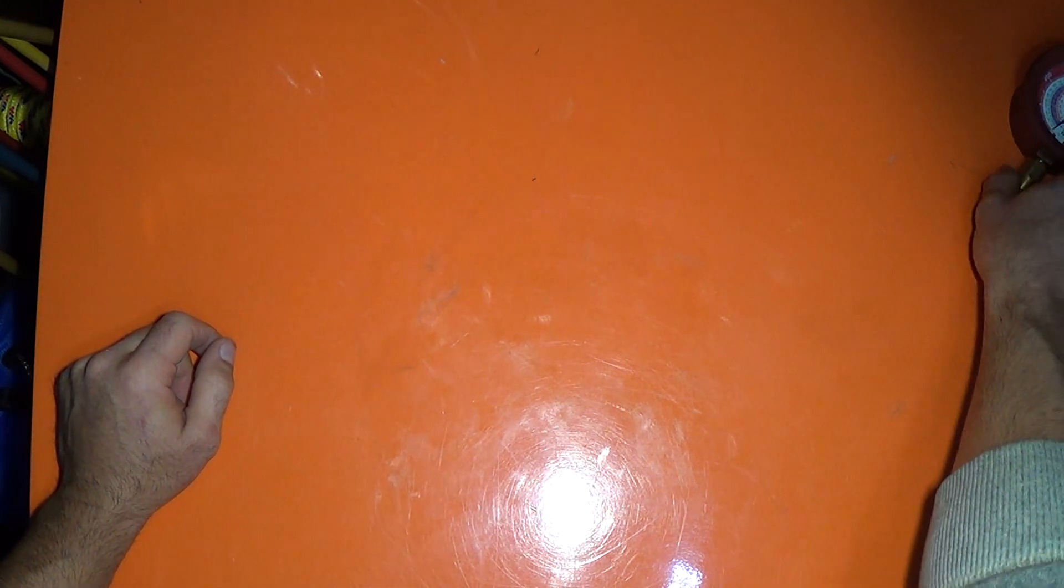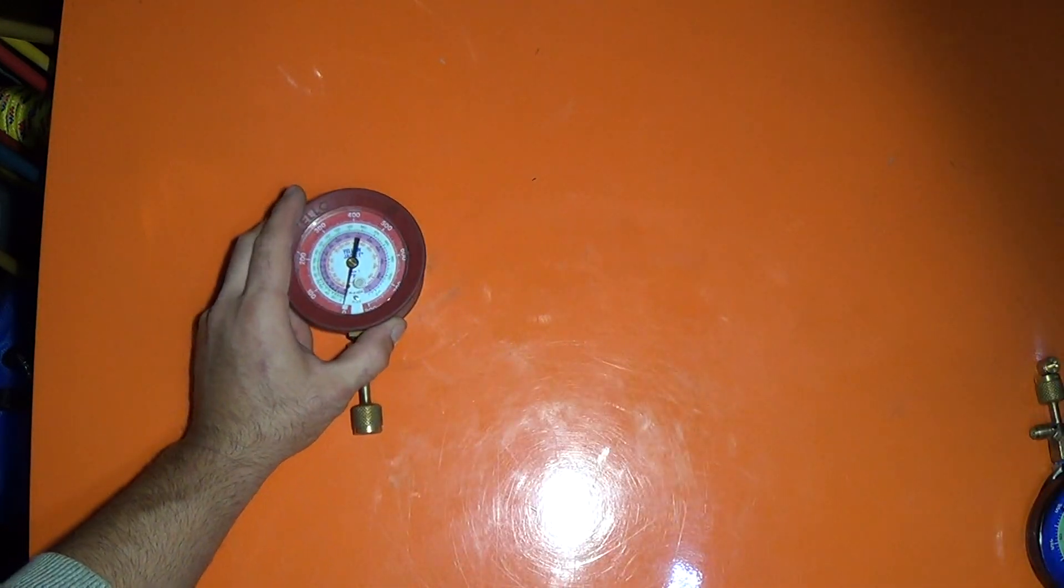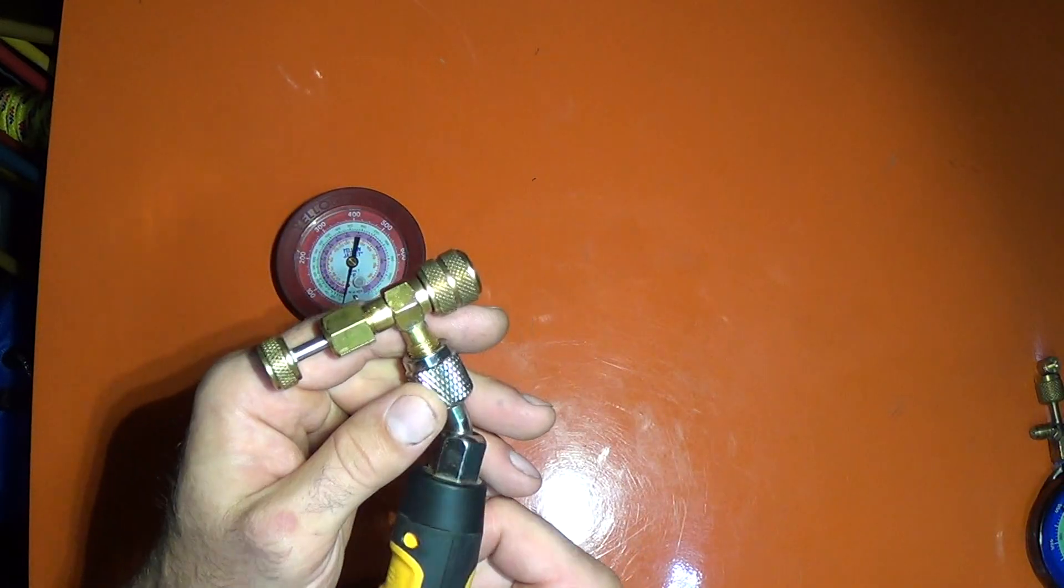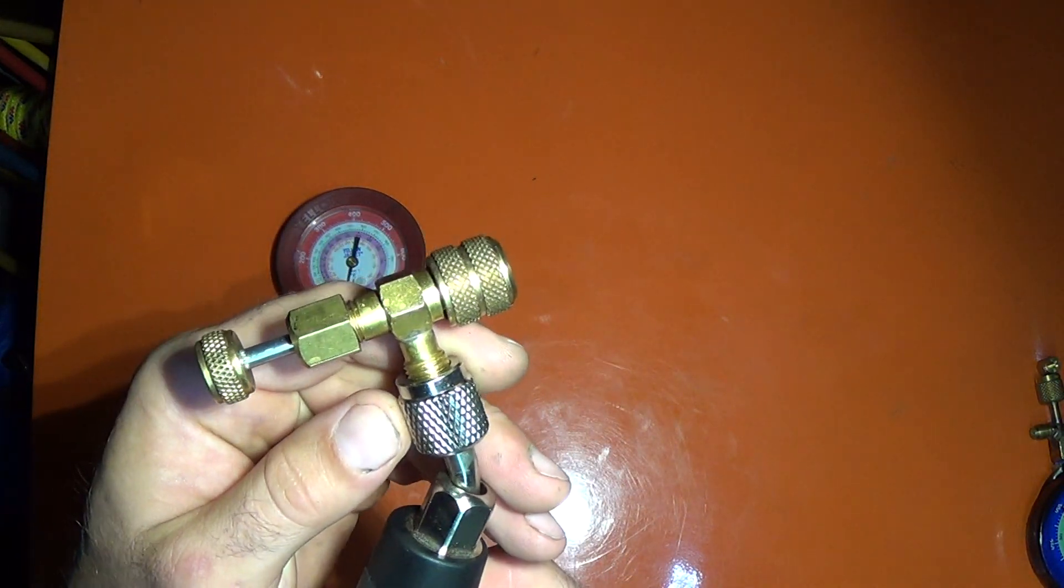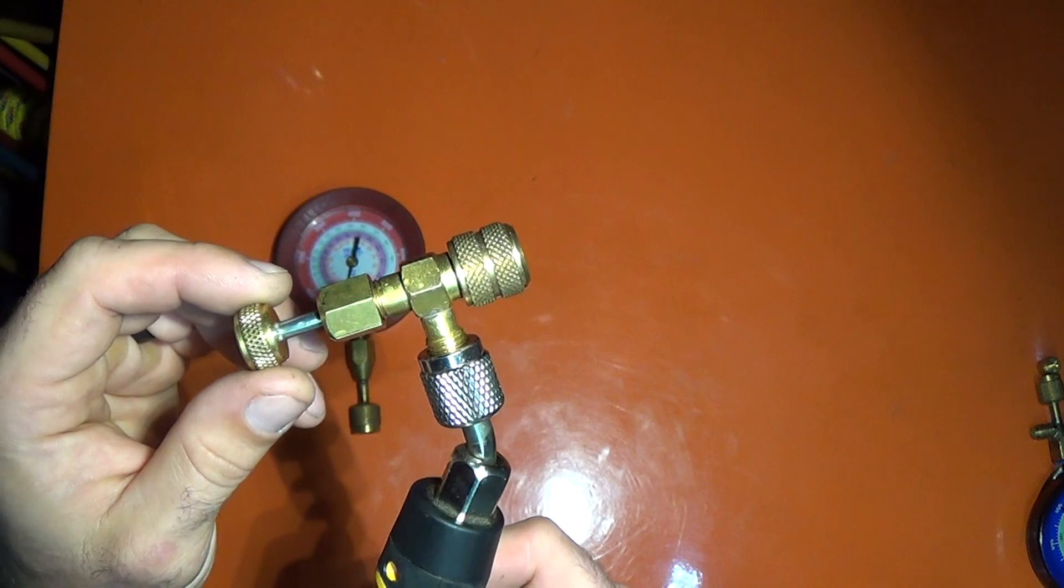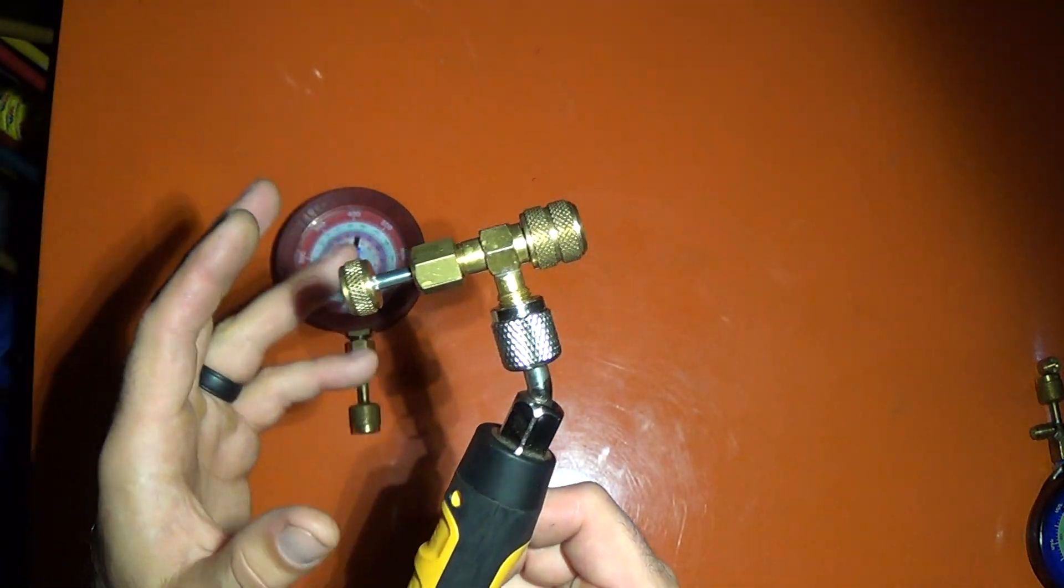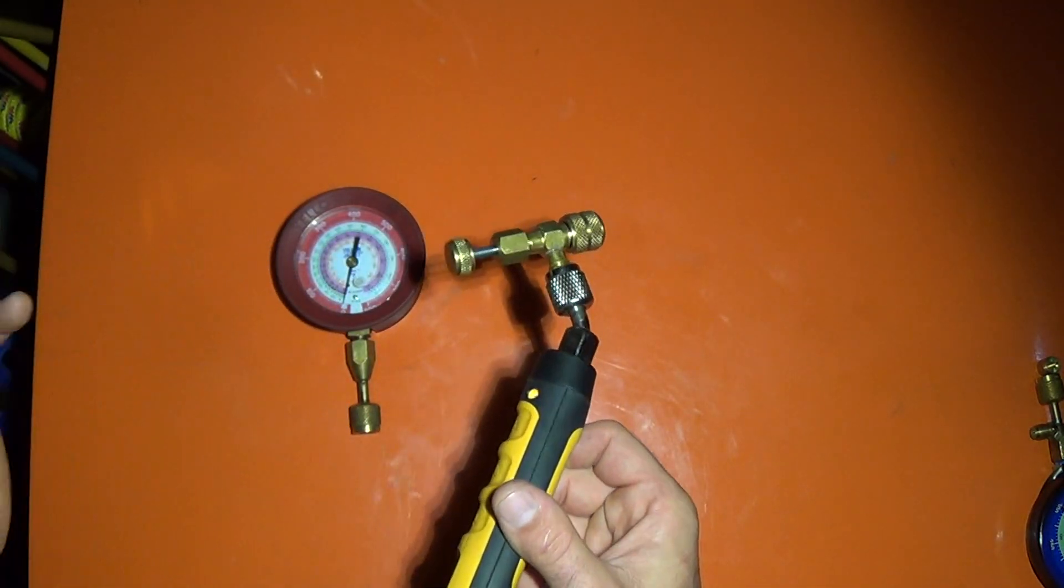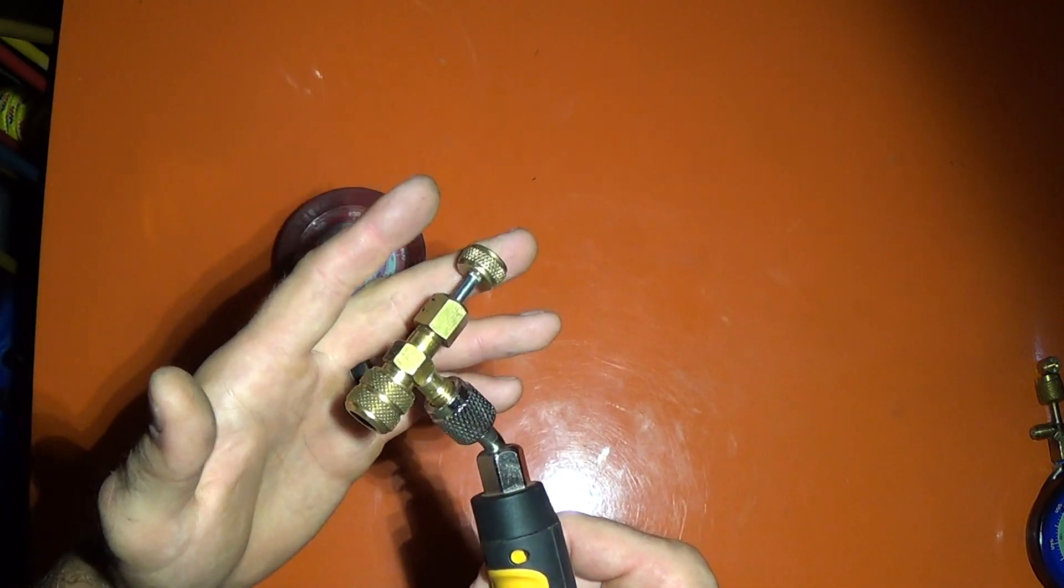Alright, and then of course on my high side gauges, I use these core depressors. I got a video on these, but that's just, that decreases your refrigerant loss even more for having these core depressors.